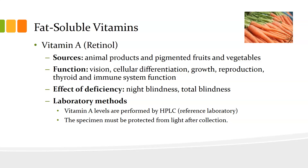Vitamin A, also known as retinol. Sources are animal products and pigmented fruits and vegetables, especially in the red and orange families — carrots, sweet potatoes, and so on. It's worth noting that the vitamin A in vegetables is present as beta-carotene, which must be converted to retinol, and adequate thyroid function is required for that conversion. Retinol in animal products is already in the right form for absorption.